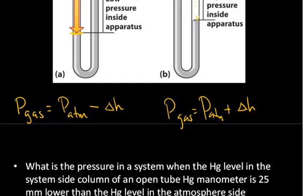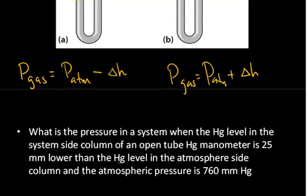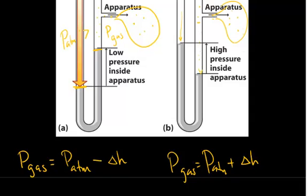An example of this type of measurement: what is the pressure in a system when the mercury level in the system side of an open-tube mercury manometer is 25 millimeters lower than the mercury level on the atmosphere side, and the atmospheric pressure was measured from a barometer to be 760 millimeters of mercury? This corresponds to a situation where the level is lower on the system side.